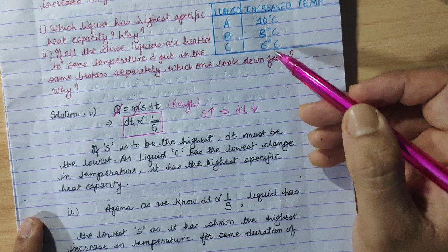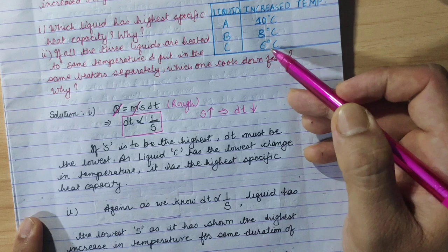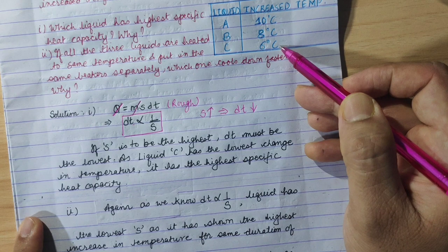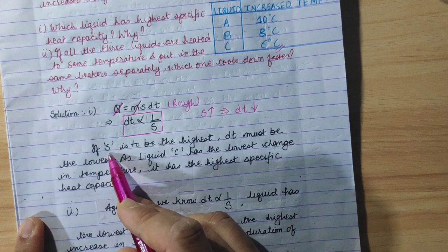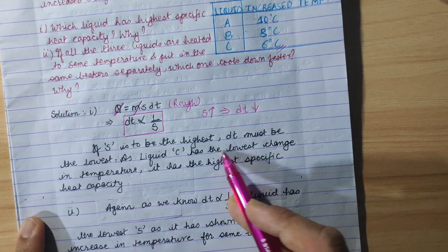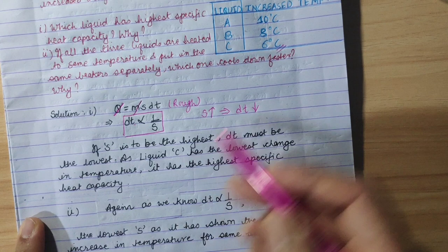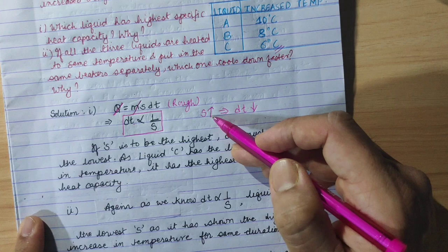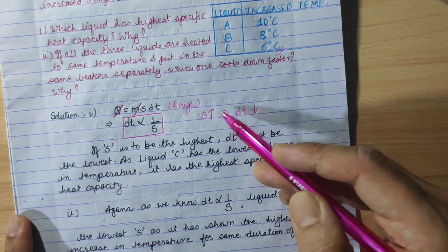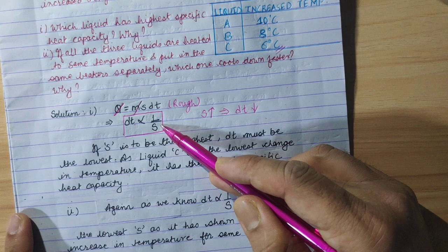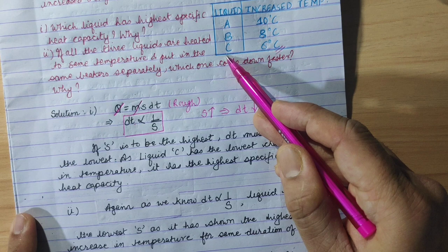Now let's see. Liquid C has the lowest change in temperature at 6°C. Since ∆T is inversely proportional to s, if s is to be the highest, ∆T must be the lowest. As liquid C has the lowest change in temperature, it has the highest specific heat capacity. This is the answer to the first part.